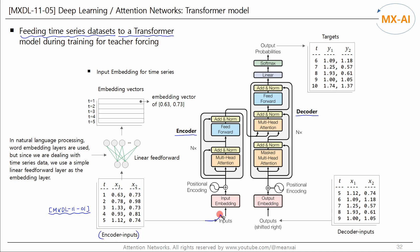The encoder input is fed into the encoder. The decoder input is fed into the decoder, and the target data comes out as the output of the decoder. Each subset consists of five sequential data points. Natural language data may have padding tokens added to keep sequence length constant, but time-series data has no padding because the length is constant. If your data contains padding tokens, a padding-mask operation is required. Since time-series prediction is a regression problem, we do not use softmax in the output layer. Therefore, the outputs are real values, not probabilities.